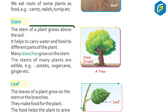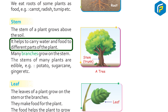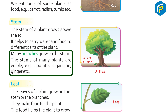Stem. The stem of a plant grows above the soil. It helps to carry water and food to different parts of a plant. Many branches grow on the stem. The stem of many plants are edible, e.g. potato, sugarcane, ginger, etc.